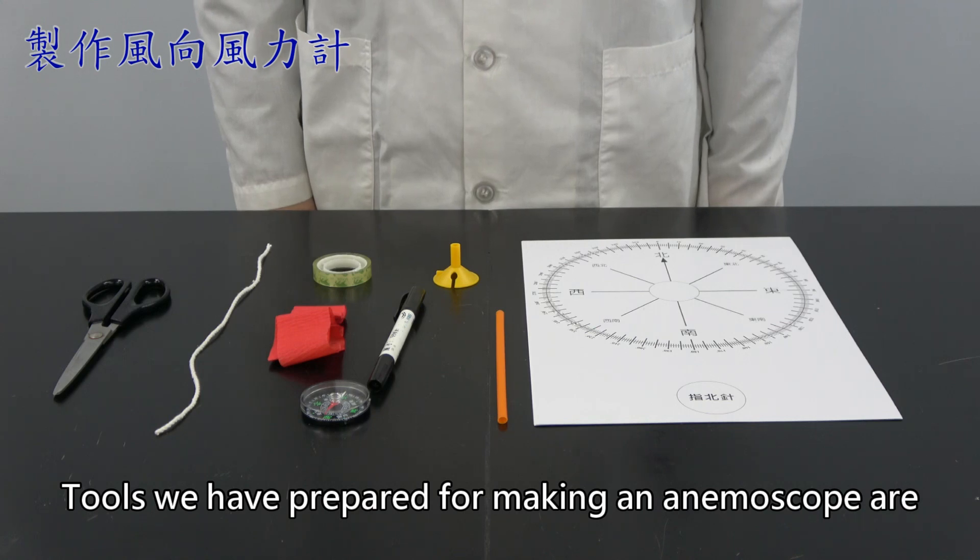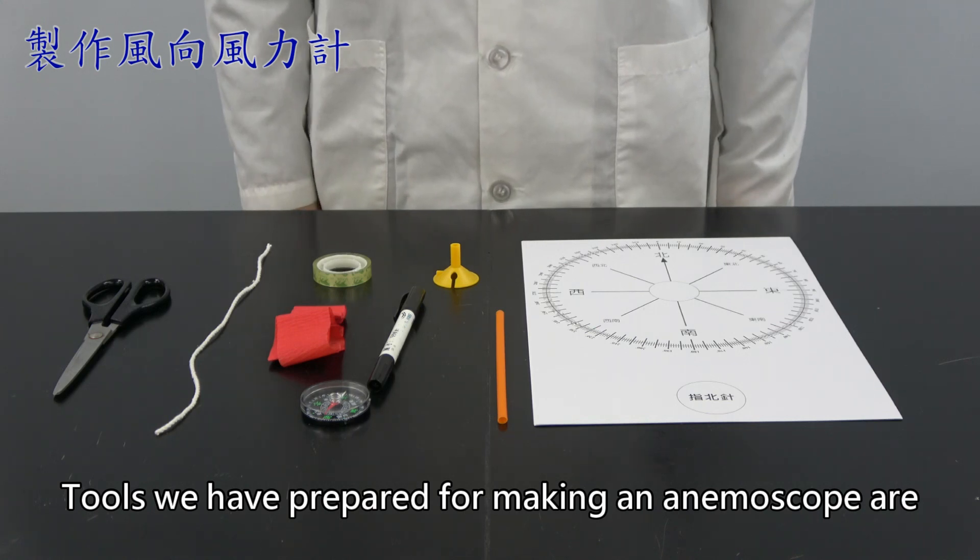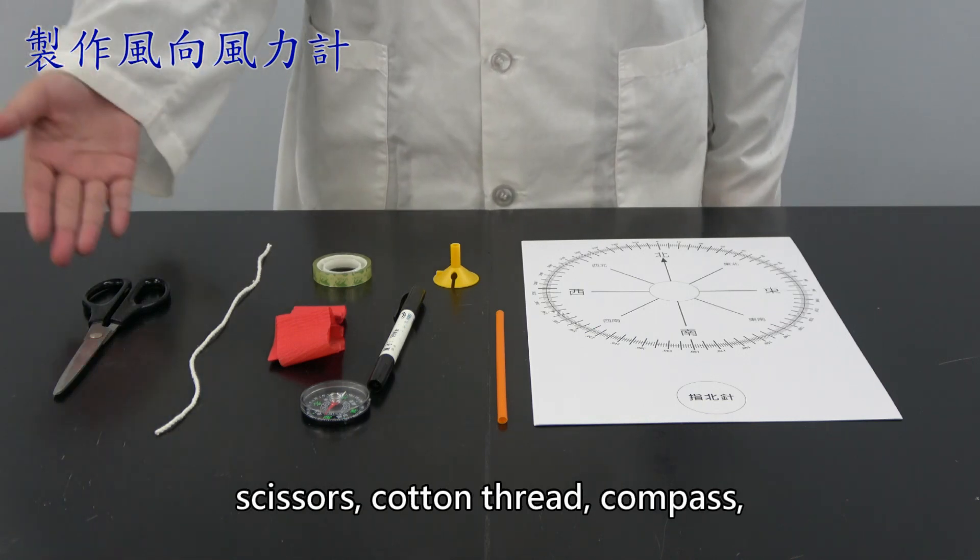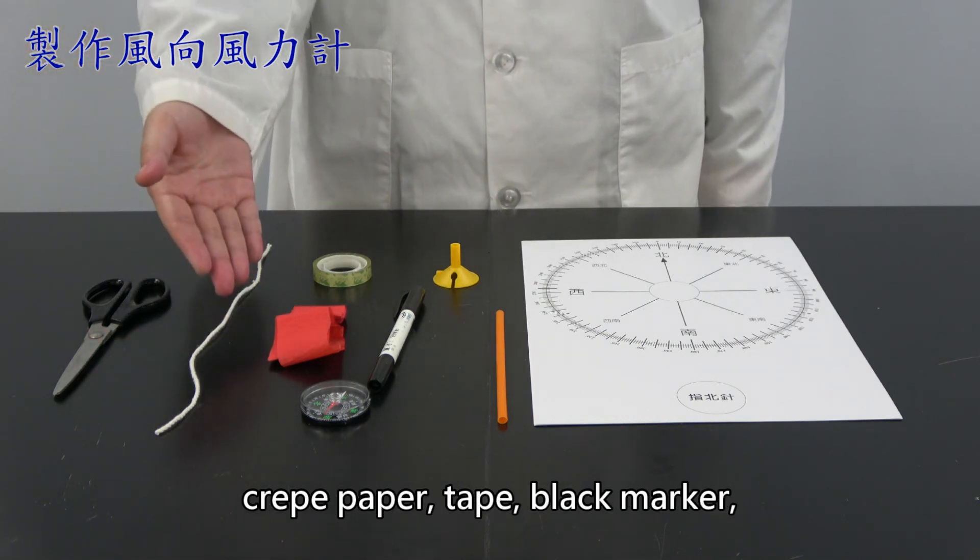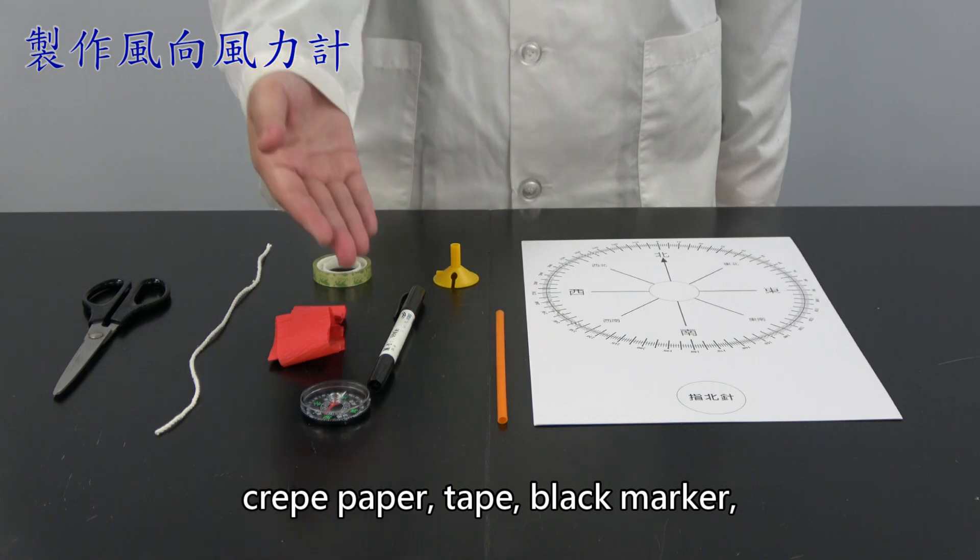Tools we have prepared for making an anemoscope are scissors, cotton thread, compass, craft paper, tape, black marker, holder, straw, and direction sheet.